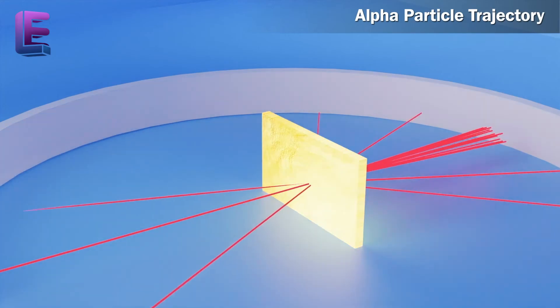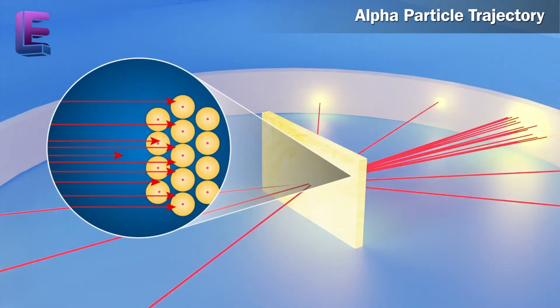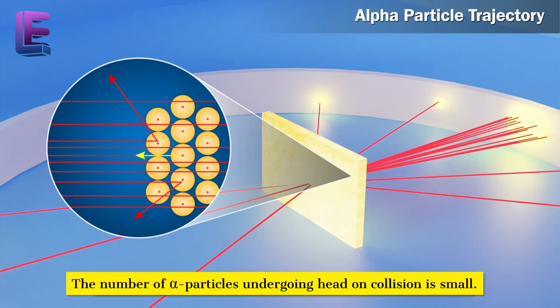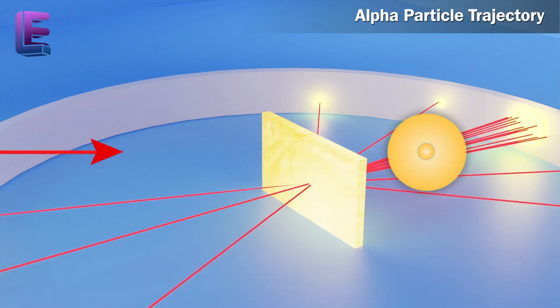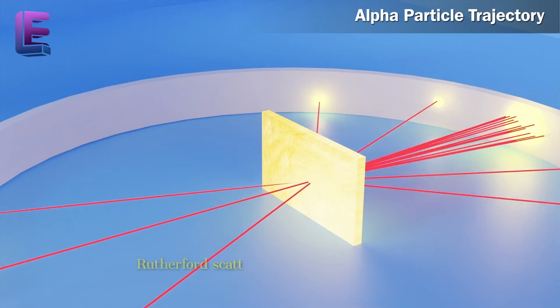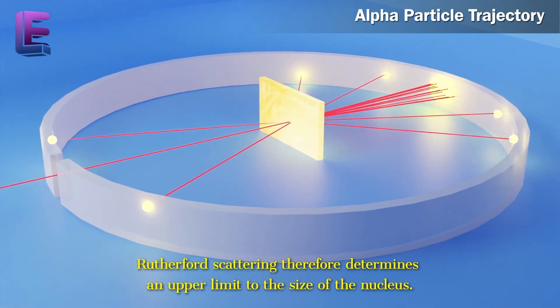The fact that only a small fraction of incident particles rebound back indicates that the number of alpha particles undergoing head-on collision is small. This, in turn, implies that the mass and positive charge of the atom is concentrated in a small volume. Rutherford scattering therefore determines an upper limit to the size of the nucleus.